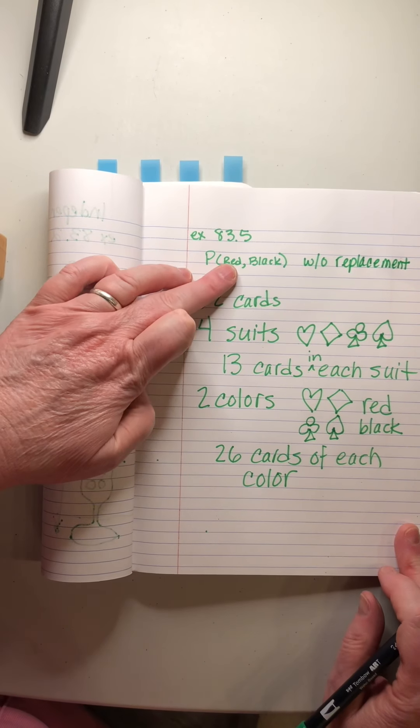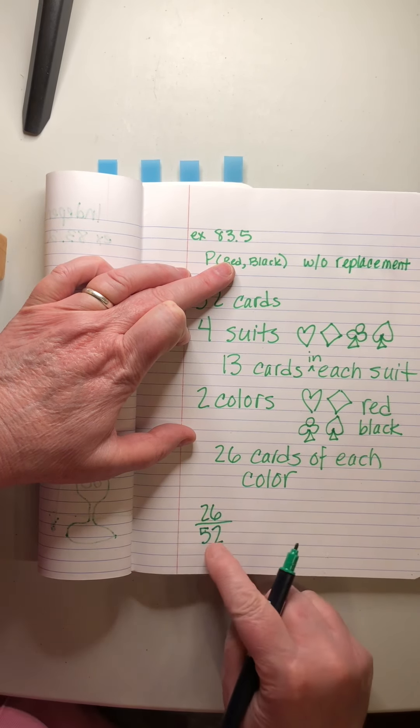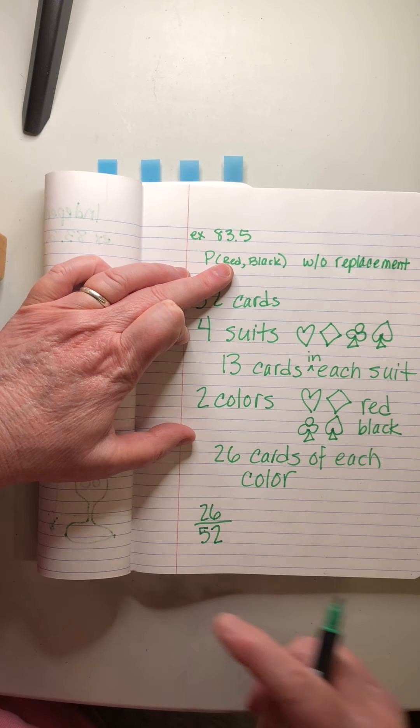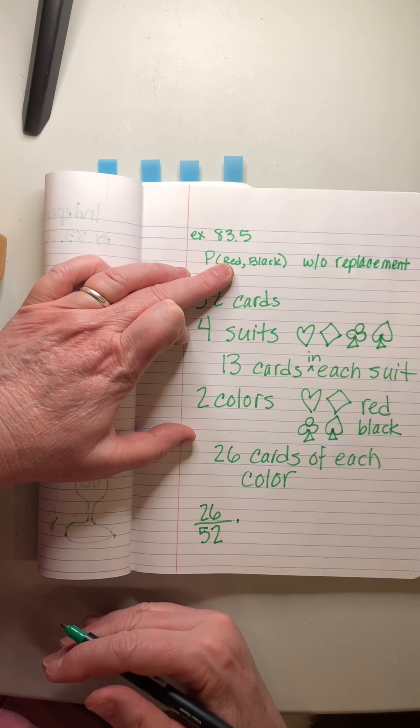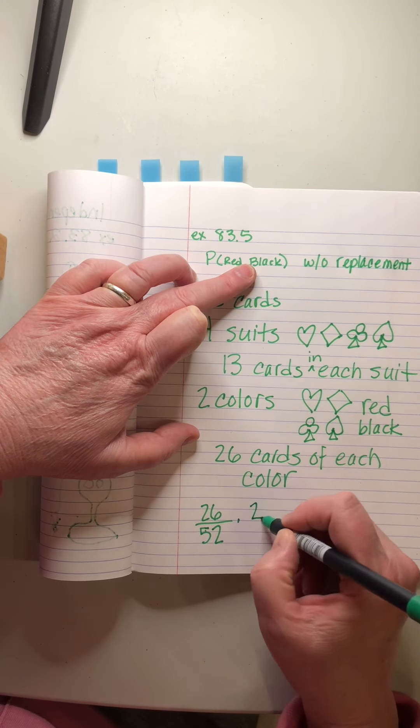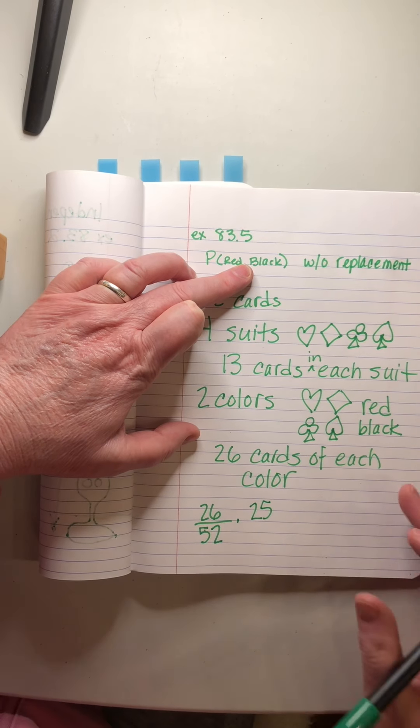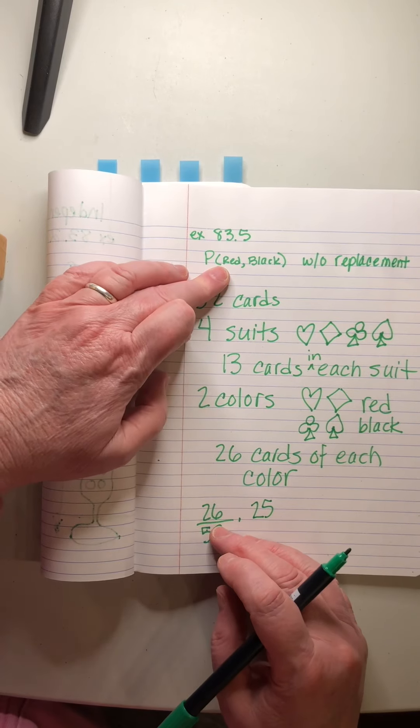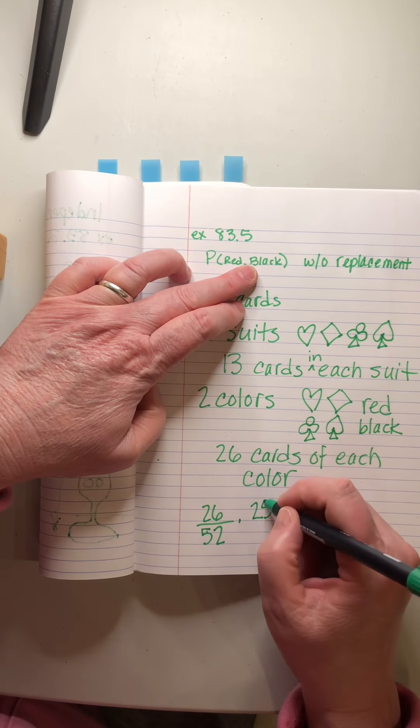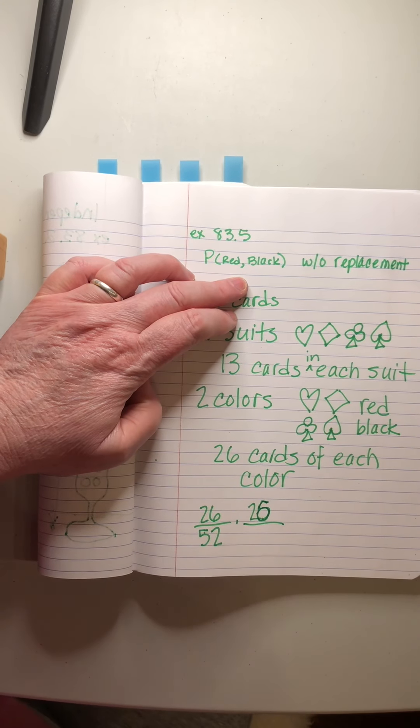We're supposed to find what is the probability of drawing a red card and then a black card without replacement. The probability of drawing a red: there's 26 cards of each color, so that means 26 out of 52 is how many I would get. That's the probability of drawing a red. So we assume that I get a red and we lay it down on the table. Now we want to know the probability of drawing a black. There's still 26 black cards in there because I didn't take out a black card, I took out a red card.